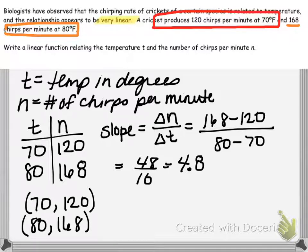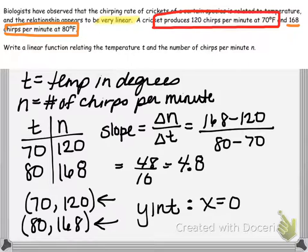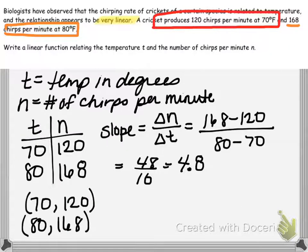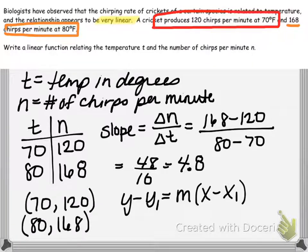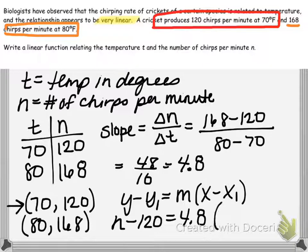Looking at the two coordinates we have, neither is the y-intercept, because if I had the y-intercept the x value would have been 0. Since neither coordinate is the y-intercept, I'm going to write my equation in point-slope form. Quick review: y minus y sub 1 equals my slope times x minus x sub 1. But I'll use the variables in this problem, where the y value was really N. You can use either point; I'm going to use the first one, 70 comma 120. So it would be N minus 120 equals my slope, 4.8, times T minus 70.